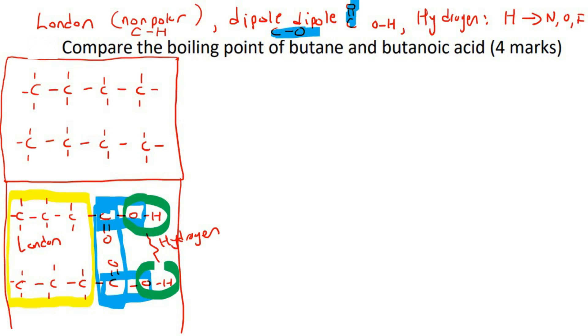So it will be more difficult to separate butanoic acid molecules from each other. So we would expect that the boiling point is going to be much higher for butanoic acid because more energy is required.